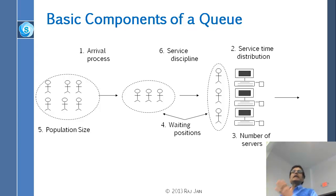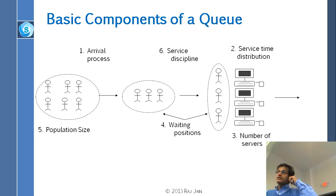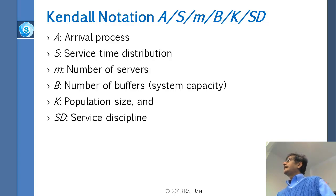When you want to notate a queue, you have to specify all five — actually six — things. The sixth one is service discipline: how are they being served? First come first served, or the heaviest person served first, or the loudest first? That discipline also applies. So Kendall made a notation called Kendall notation: A, S, M, B, K, D — arrival process, service time distribution, number of servers, number of buffers, population size, and service discipline.